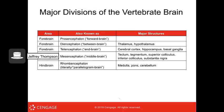Now let's talk about the major divisions of the vertebrate brain. We have the forebrain, midbrain, and hindbrain. The hindbrain, or rhombencephalon, is composed of the medulla, pons, and cerebellum. The midbrain, or mesencephalon, includes the tectum, tegmentum, superior colliculus, inferior colliculus, and substantia nigra. The forebrain, or prosencephalon, includes the diencephalon — thalamus and hypothalamus — and the telencephalon — cerebral cortices, hippocampus, and basal ganglia.